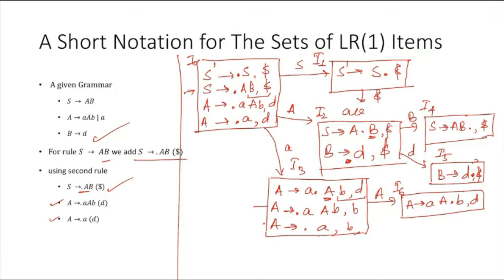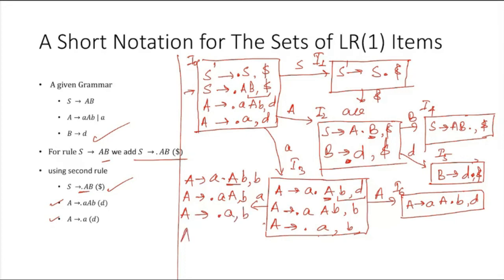We also add: A to dot small-a capital-A with lookahead B, A to dot A with lookahead B, and A to A dot with lookahead B. This generates another item set, I7. We continue going as long as new item sets are being generated.